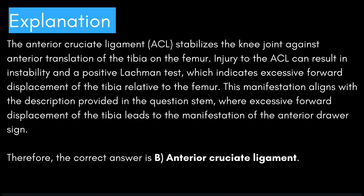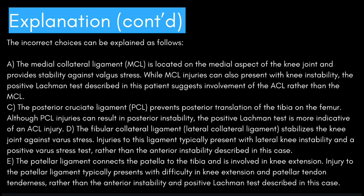Therefore, the correct answer is B: anterior cruciate ligament. Let's see why the other answer choices are incorrect. The medial collateral ligament is located on the medial aspect of the knee joint and provides stability against valgus stress; while MCL injuries can present with knee instability, the positive Lachman test suggests ACL involvement. The posterior cruciate ligament prevents posterior translation of the tibia; although PCL injuries can result in posterior instability, the positive Lachman test is more indicative of an ACL injury. The fibular collateral ligament stabilizes the knee against varus stress, with injuries typically presenting with lateral knee instability and a positive varus stress test.